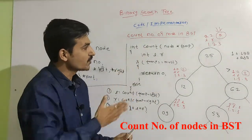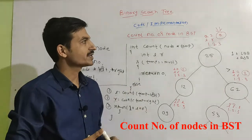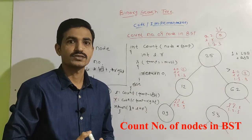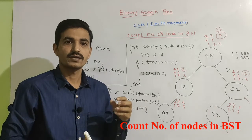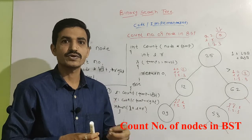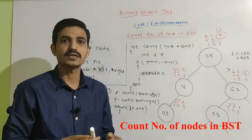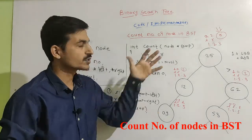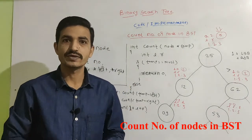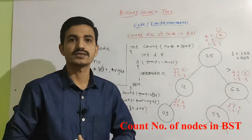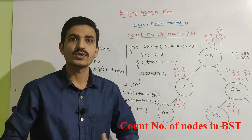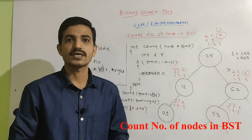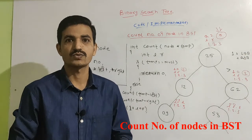You can execute a recursive code in this way for any kind of binary search tree. This is the recursive code — it will execute the function recursively and you will get the total number of nodes, which is 5 in this binary search tree. Hope you like this video. If you like this video, kindly subscribe the channel. Thank you.